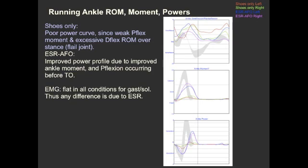If we contrast that to running in the ESR condition, I can tell you the EMG activity is really not significantly different, but there are some pretty dramatic changes at the ankle moments and powers. The plantar flexor moment peaks increase from 15% in the shoes-only condition up to 80% of normal in the ESR condition. The power peaks jump from 7% in the shoes-only condition to a whopping 71% in the ESR conditions.